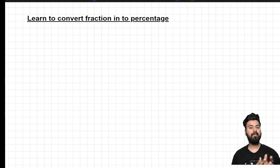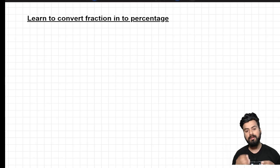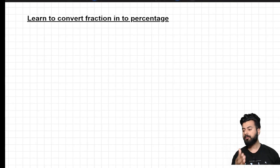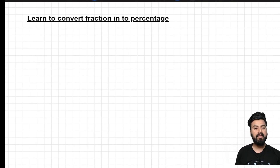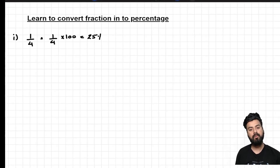After learning some important fractions and their percentage equivalents, it is time to learn something very crucial for percentage calculation: how to convert a fraction into a percentage. The conventional way is to multiply the fraction by 100. For example, 1/4 multiplied by 100 gives 25 percent — something we are already aware of.